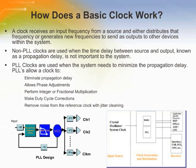A basic clock circuit works by receiving an input frequency from a source and either distributing that frequency or generating new frequencies to send as outputs to other devices within the system. This can either be done using phase locked loop, PLL, or non-PLL based circuitry. The input to the clock can come from either a crystal or from other devices within the system. A system signal is either single-ended or differential, which is defined by the source device. The main difference between PLL and non-PLL clocks is that the PLL uses a feedback loop to remove the time delay between the signal input and output, known as propagation delay. The feedback loop also allows the PLL to act as a phase detector to keep an oscillator in phase with an incoming frequency.